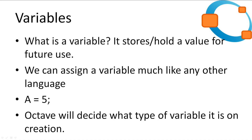Now we can also use variables in Octave. A variable just stores and holds a value for later use. If you have done programming in any other language before, this will be very simple to grasp. We choose a variable name like capital A and assign a value of 5 to it. Octave will automatically decide what type to store the value as on the fly. Let's look at setting some variables and see what values they hold.